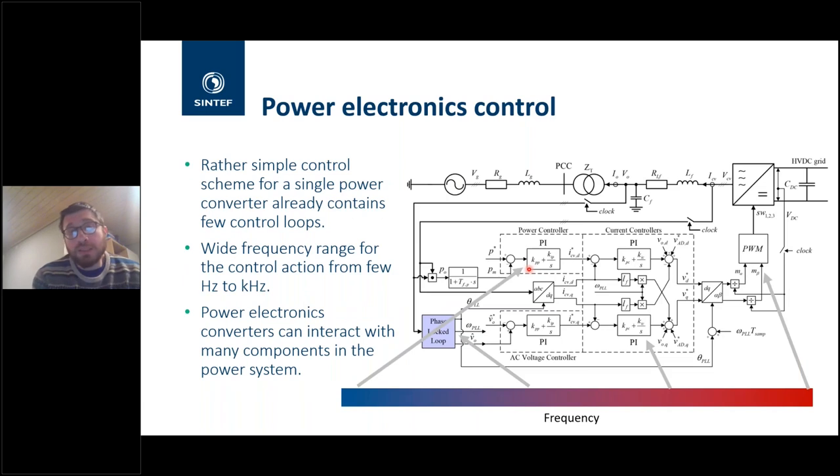If we look at a bit more into the reasons why power electronics can be so susceptible to interoperability issues, this scheme is probably one of the simplest control schemes that can have for a power converter. There are several control blocks, but what you can observe is that several of them are cascaded. That means they act on different frequency levels.